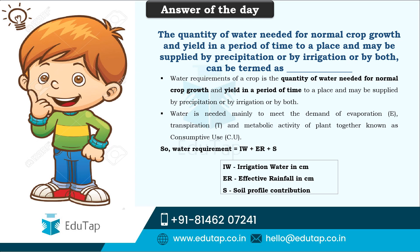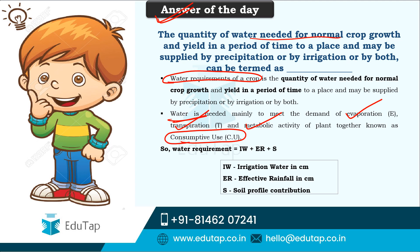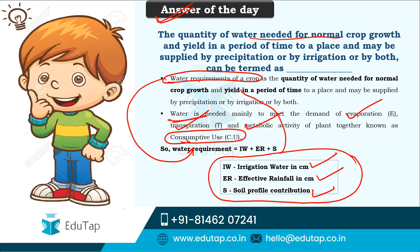Now for the answer of the day: in the last lecture I asked about the quantity of water required for normal crop growth and normal yield in a particular period of time at a place — that is called the water requirement of a crop. Water is needed mainly to meet the demand of evaporation, transpiration, and metabolic activity of plants, which is together known as consumptive use. The water requirement equals irrigation water (cm) plus effective rainfall (cm) plus soil profile contribution.